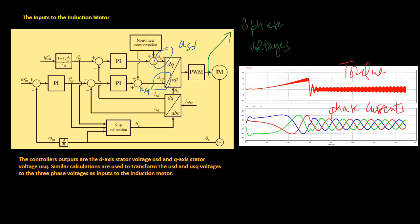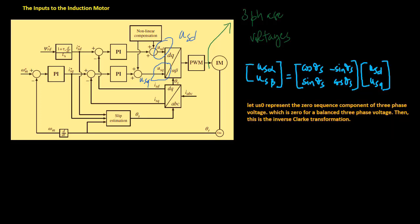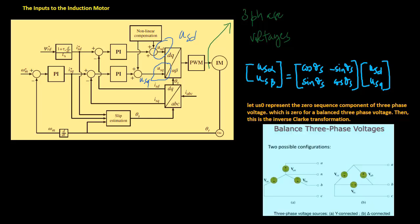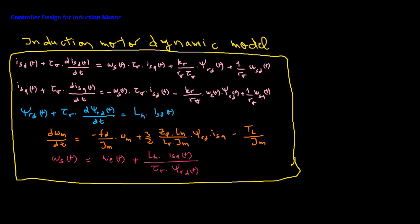Basically, the us alpha and us beta are obtained via this calculation, where us0 represents the zero sequence component of three-phase voltage, which is 0 for a balanced three-phase voltage. Then this is the inverse Clark transformation.